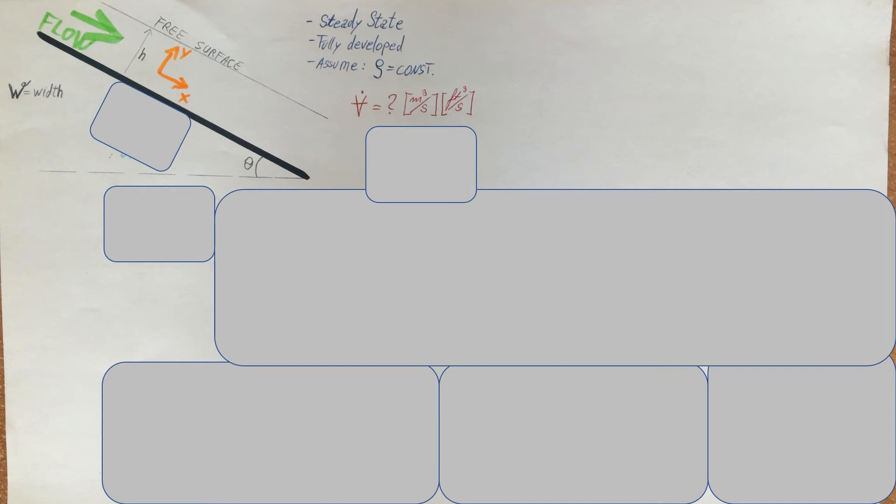Alright, let's work on a fluid flow problem. They want us to find a volumetric flow rate for a liquid flow inside a very wide inclined channel, with height given as H and width given as W. They want us to assume steady state, fully developed conditions, and assume constant properties like density, for example.